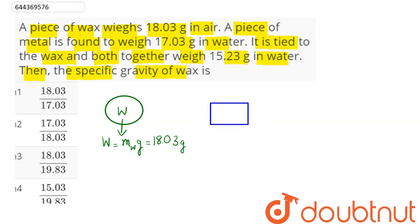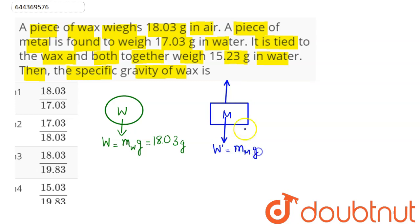In the other case, there is a metal piece. This metal weighs 17.03 grams in water. The forces acting are its weight and the buoyancy force. So the apparent weight W' equals mass of the metal into g minus the buoyant force, which is density of water into volume of the metal into g.